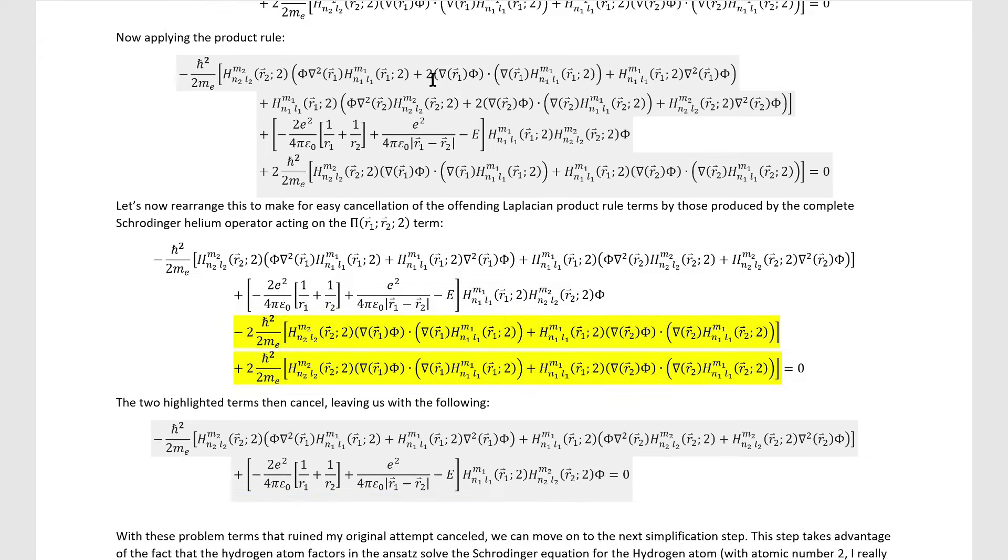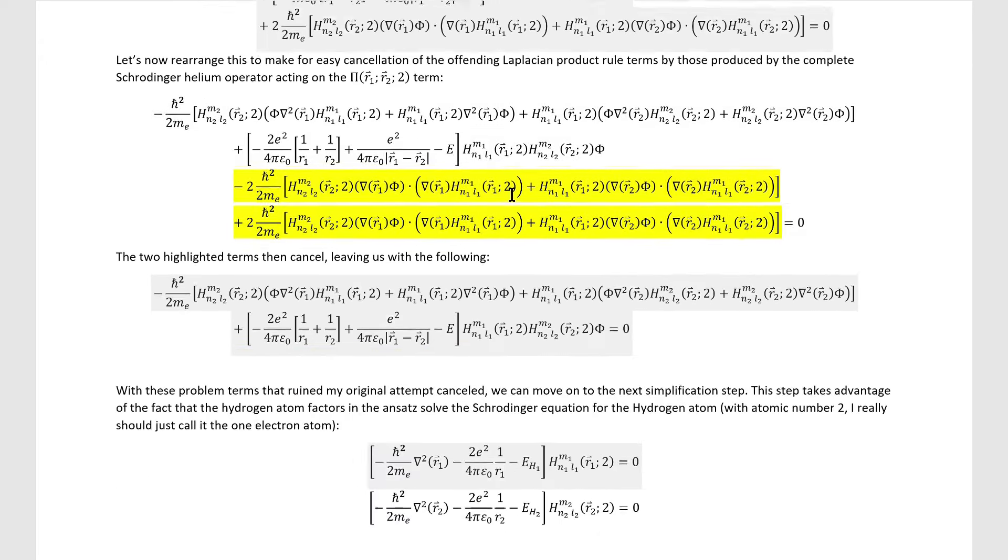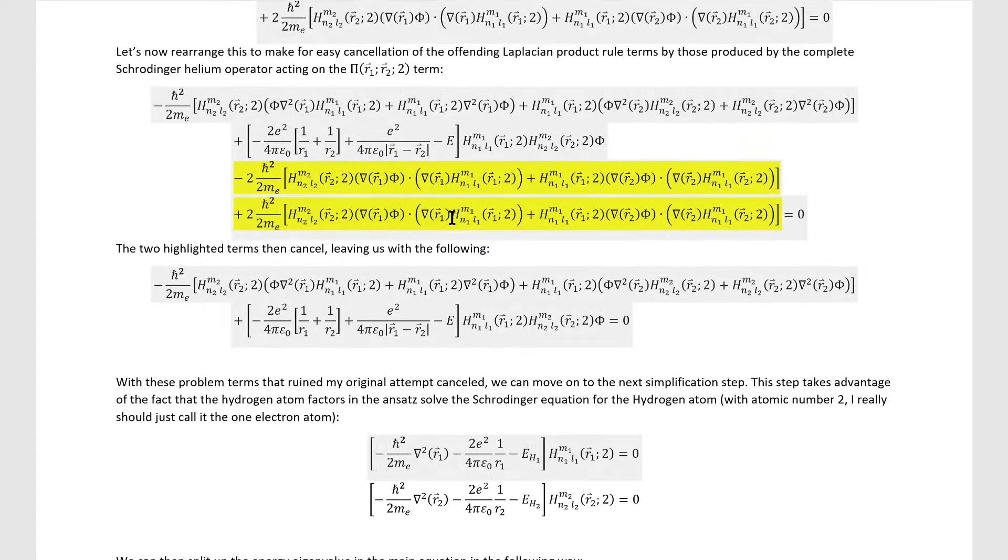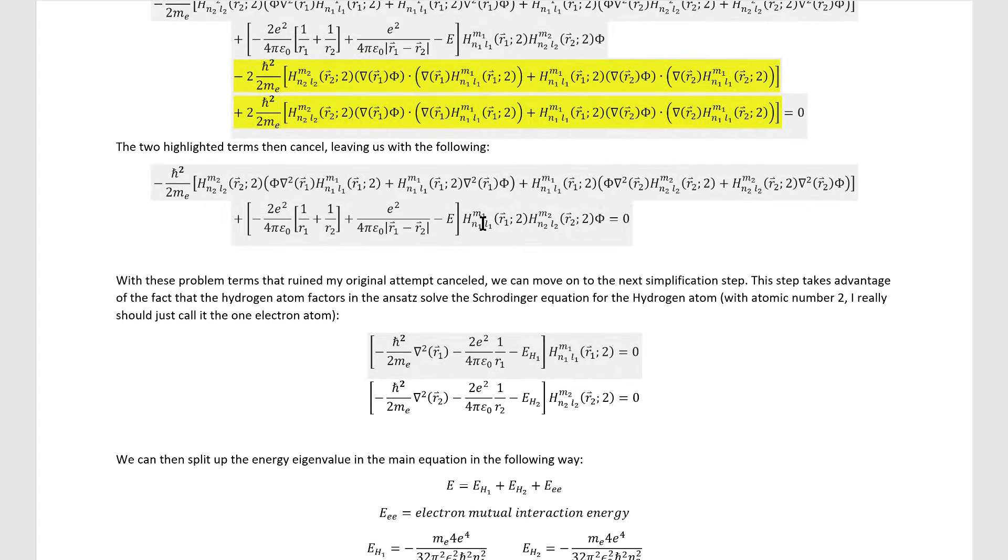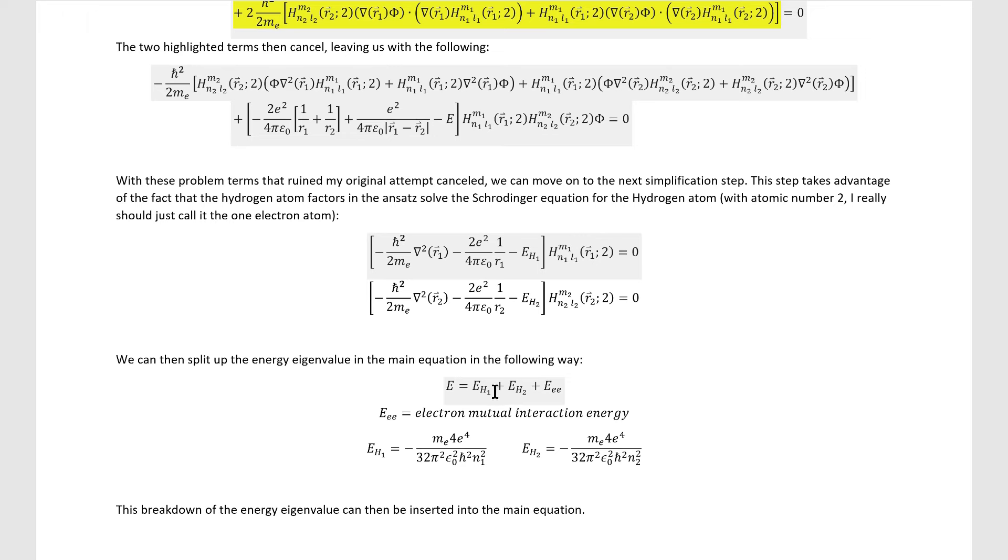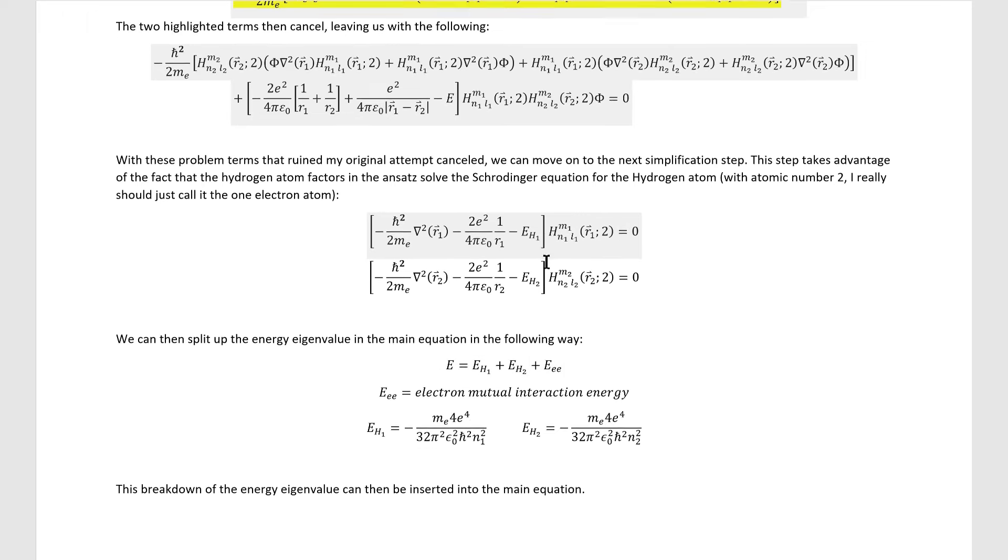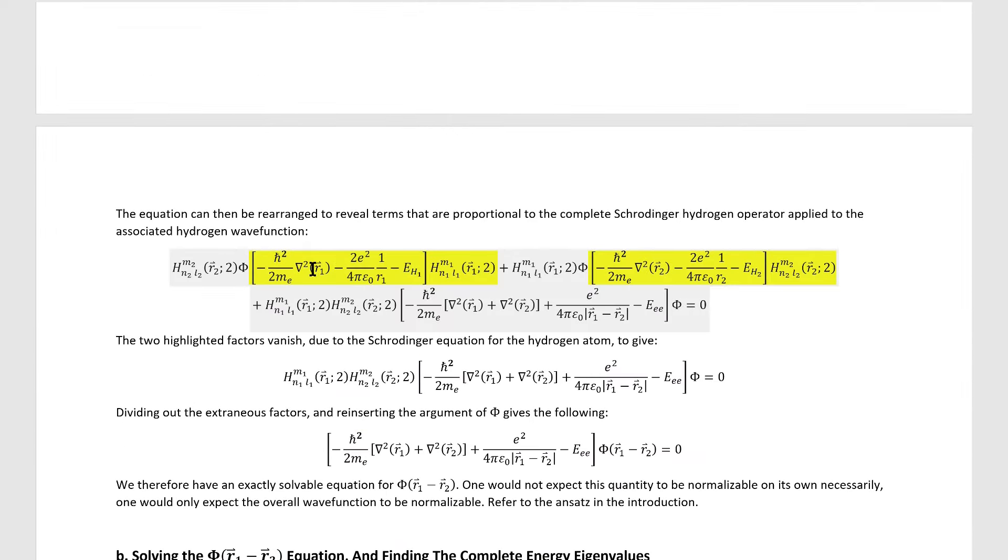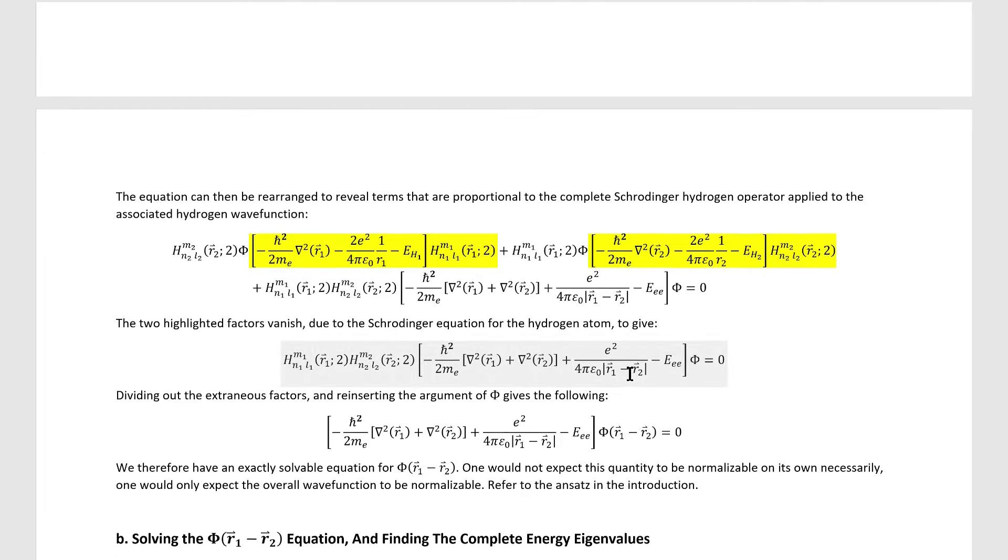However, once we extract the right terms from this part here, we see that the cancellation we set up has worked, and we're left with this simpler result. The next step is to break up the energy eigenvalues like this, so we can take advantage of these equations to get rid of even more terms. Specifically, we find these terms upon rearrangement, which both vanish, leaving us with this equation for phi. We can divide these two factors out, and we're left with something that's almost a repulsive hydrogen atom problem.